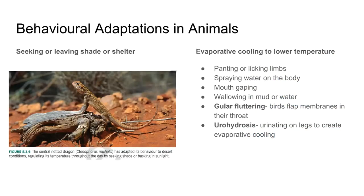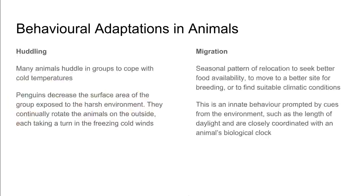Behavioural adaptations in animals include seeking or leaving shade or shelter to change body temperature. Evaporative cooling to lower temperature includes panting, licking limbs, spraying water on the body, gaping the mouth, birds flapping the membranes in their throat — called gular fluttering — and some organisms urinating on their legs to create evaporative cooling. Huddling helps organisms cope with cold temperatures by decreasing the group's surface area exposed to the harsh environment. Migration is the seasonal pattern of relocation to seek better food availability, breeding conditions, or more suitable climate, prompted by environmental cues such as the length of the day.